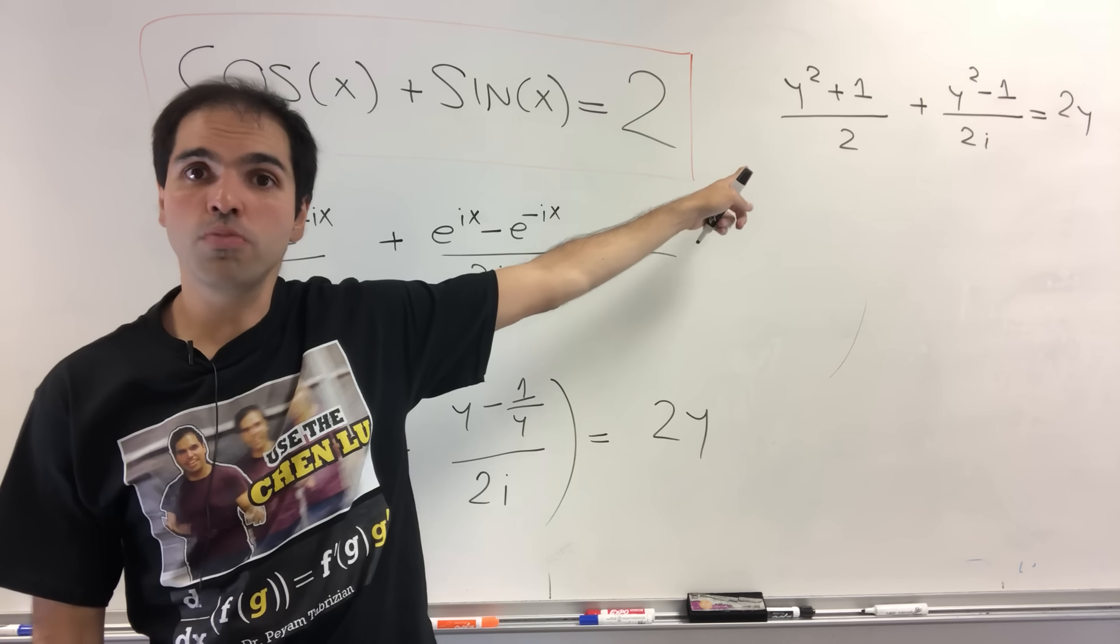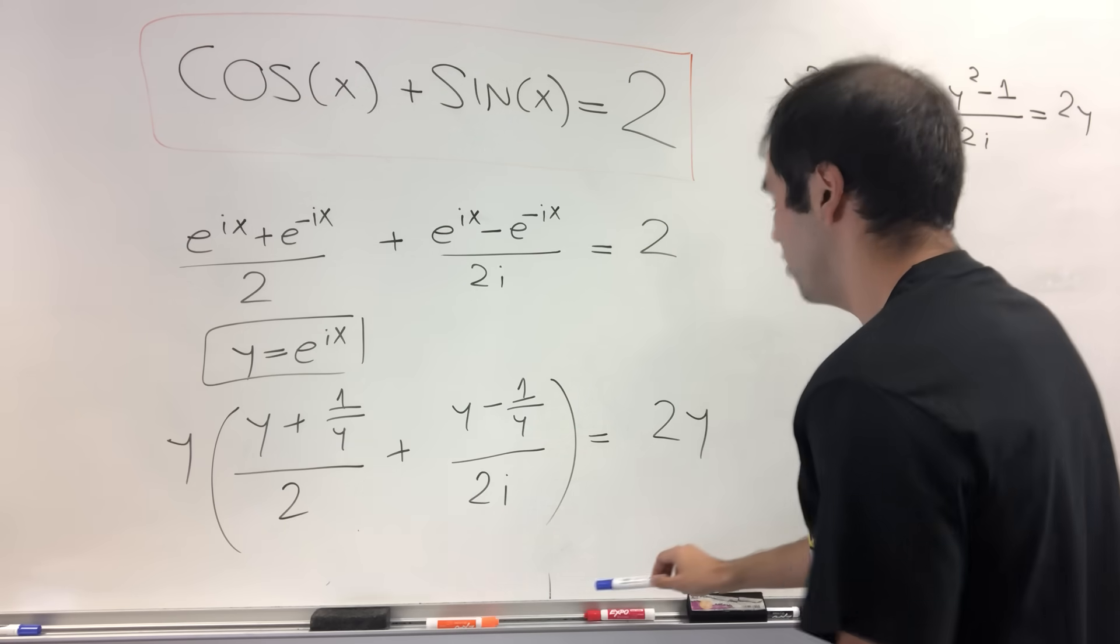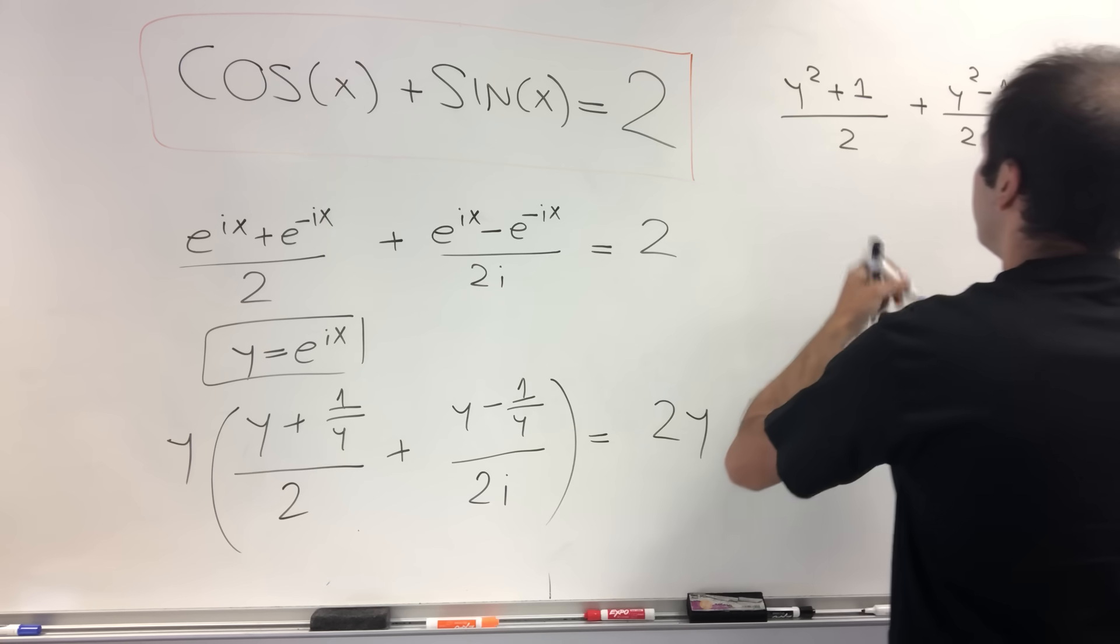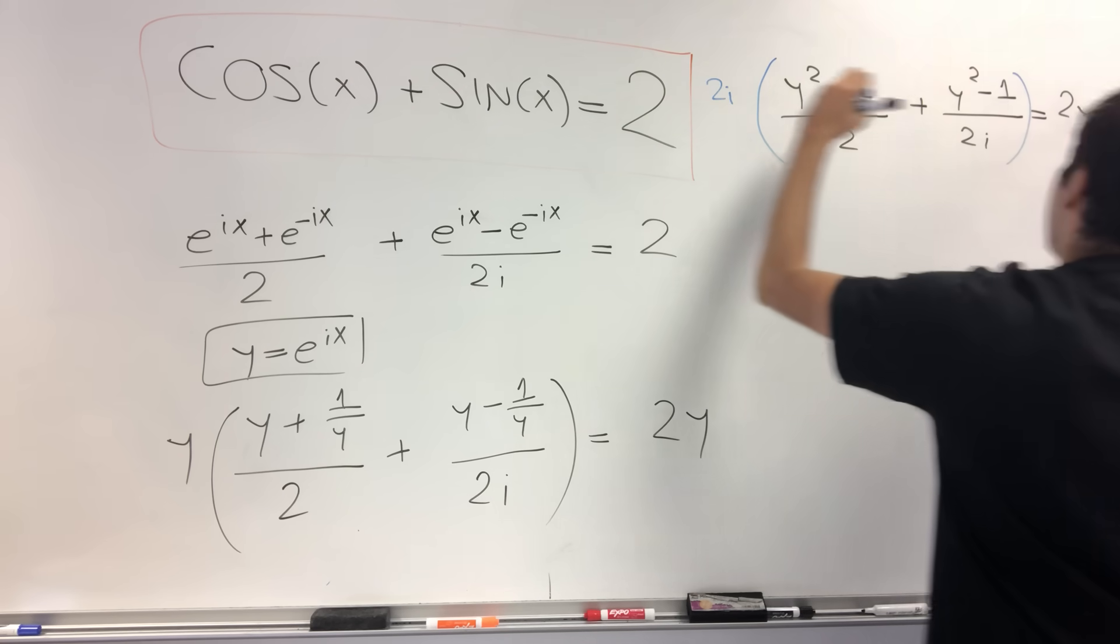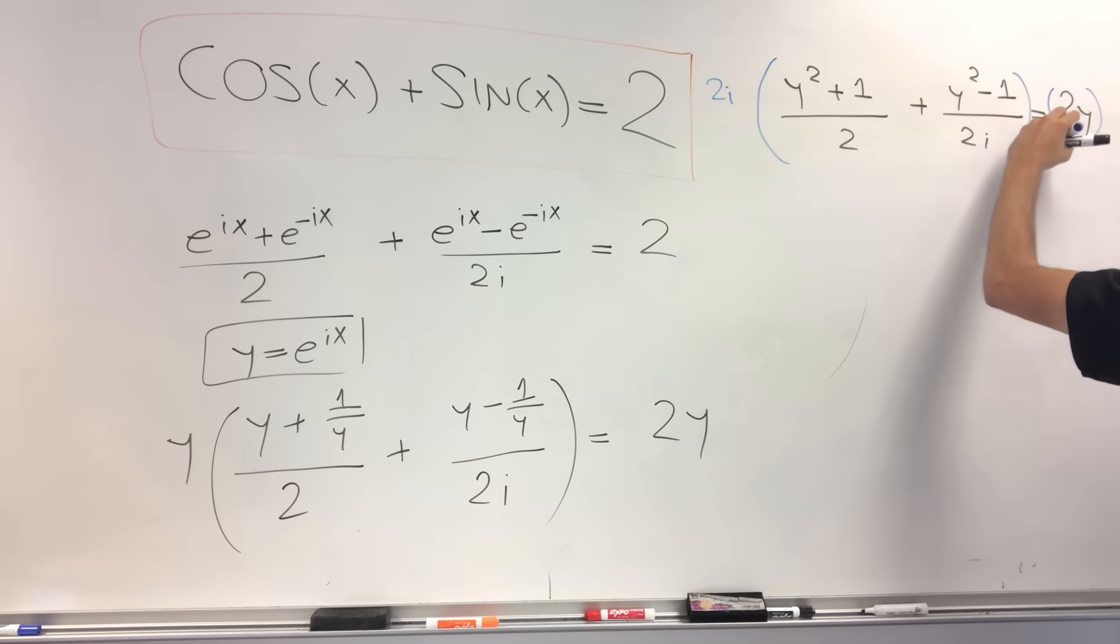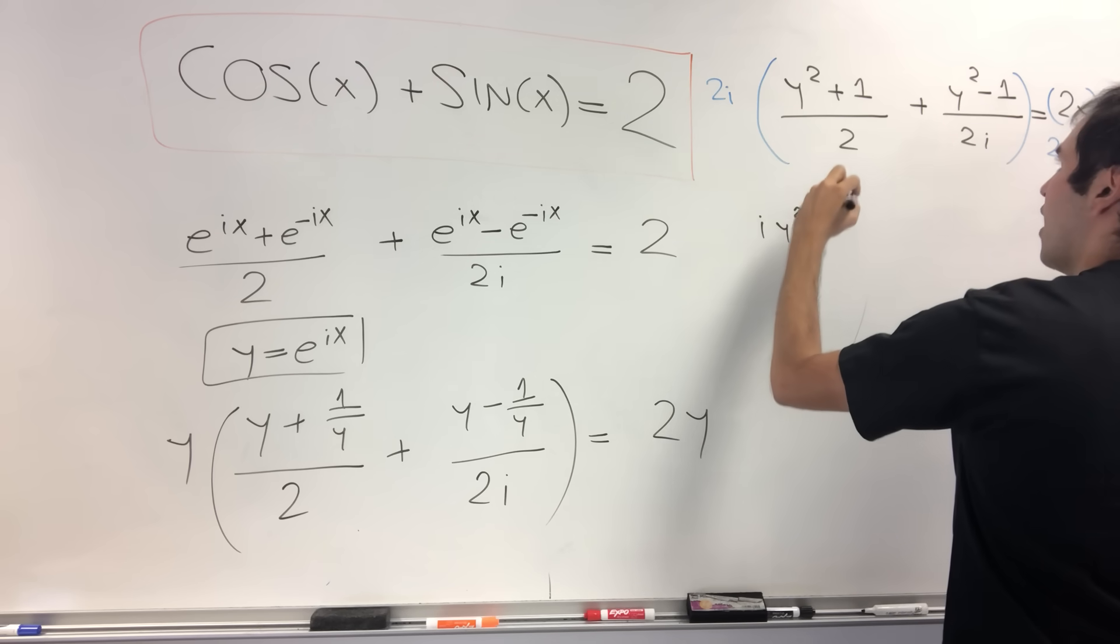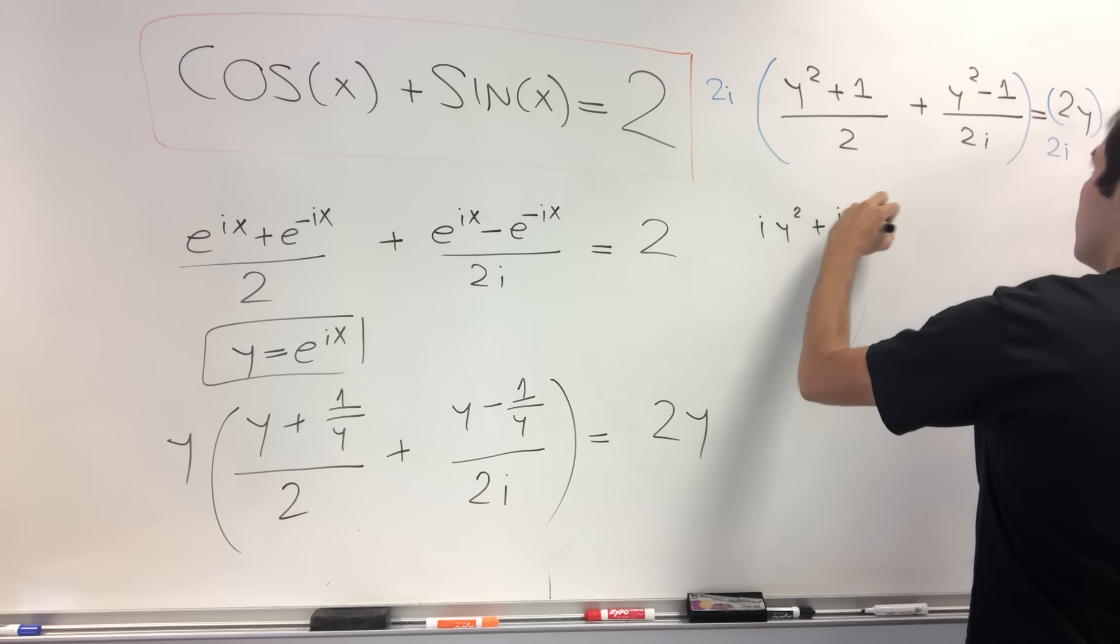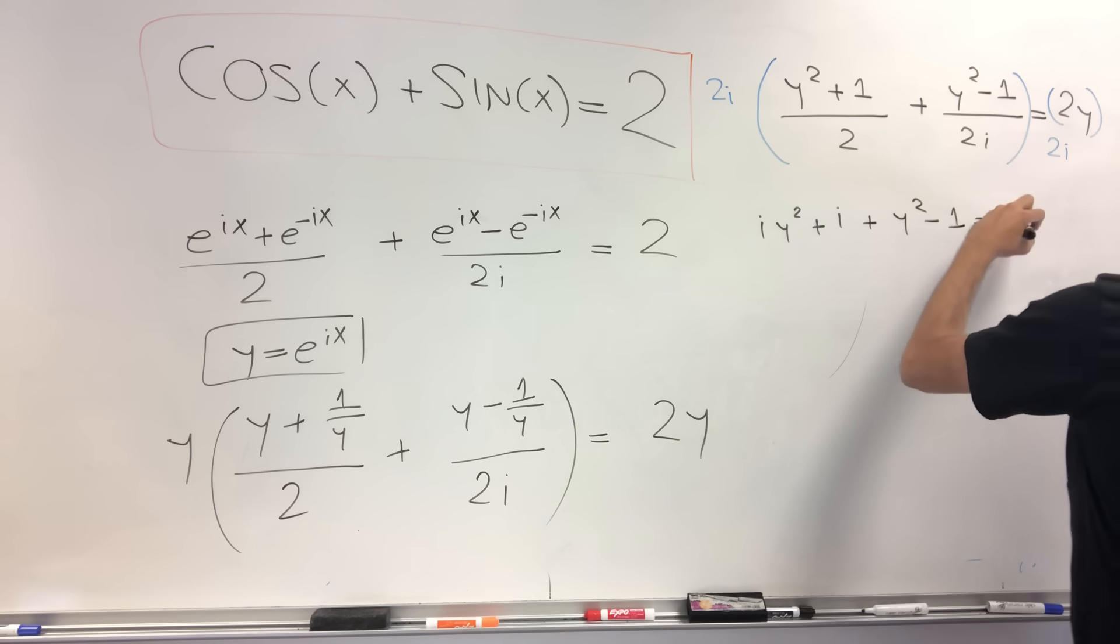And then let's just multiply both sides by 2i to get rid of this denominator. So this times 2i and then this times 2i. Then what we get is iy² + y and then plus y² - 1 equals 4iy.